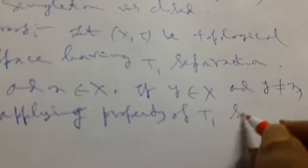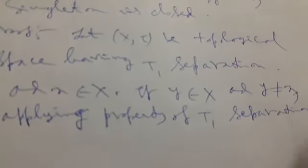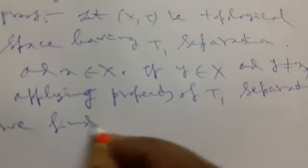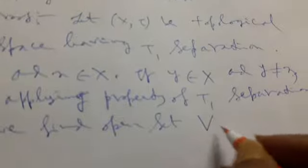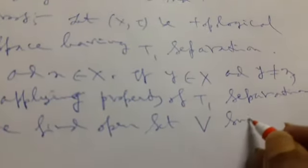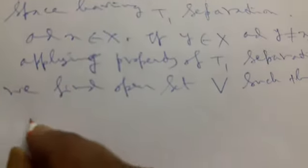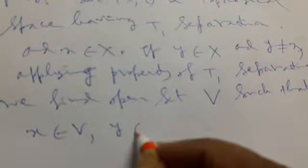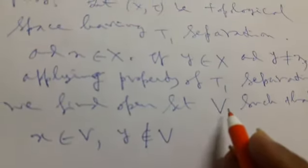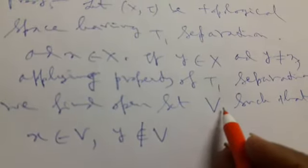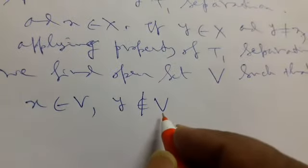Applying property of T1 separation, we find an open set V such that x element belongs to V and y element does not belong to V. It is a property of T1 separation. We separately find two distinct open sets, but here we take only one open set as per our requirement, and we assume that one point lying in this open set and another point that doesn't lie in the open set.